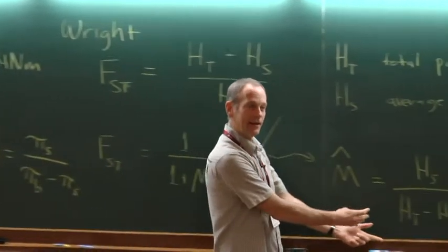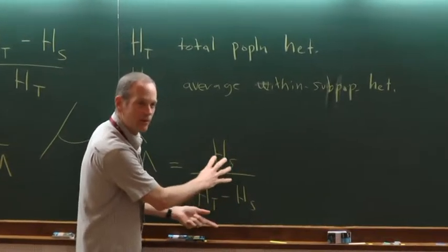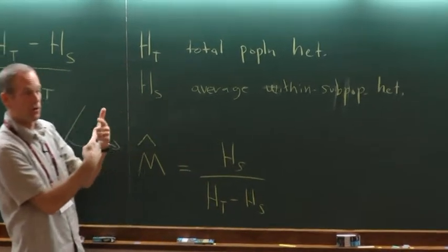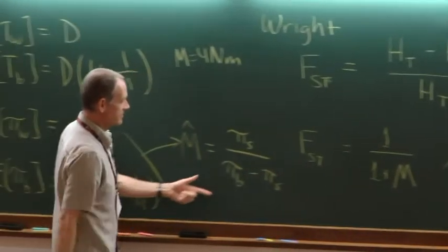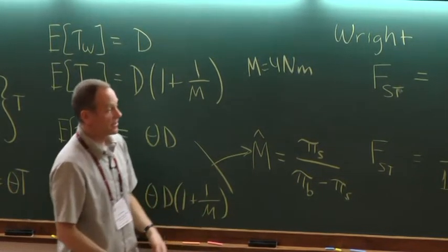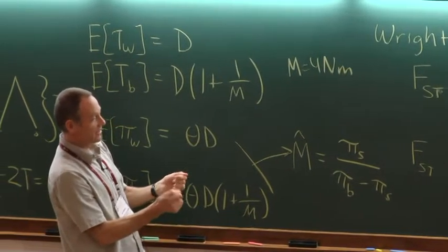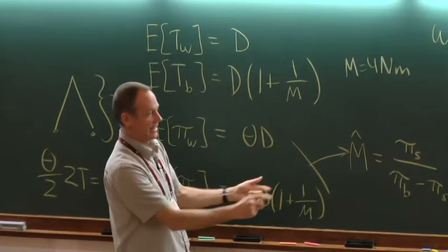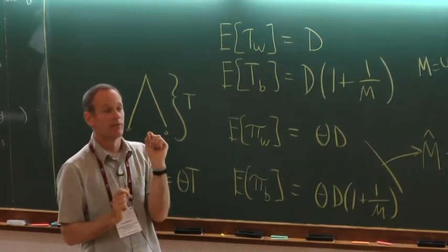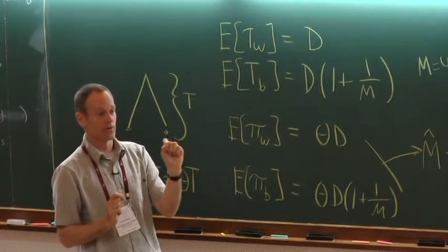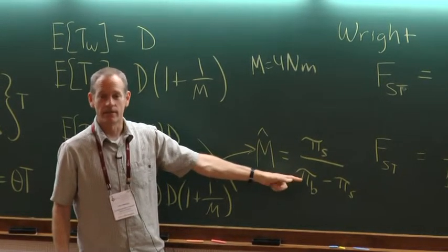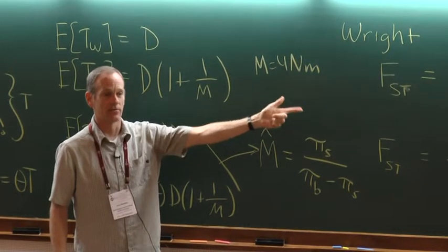You can see the similarity between the FST approach and the sequence-based approach — they're very akin to each other. These are probabilities of difference for the whole sequence, and these are the average numbers of pairwise differences, but the orientation — within and between — is the same, and the formula is the same. They would be extremely close if the mutation rate were very small. If you use per-site diversities here, it would be the same as per-site heterozygosities.